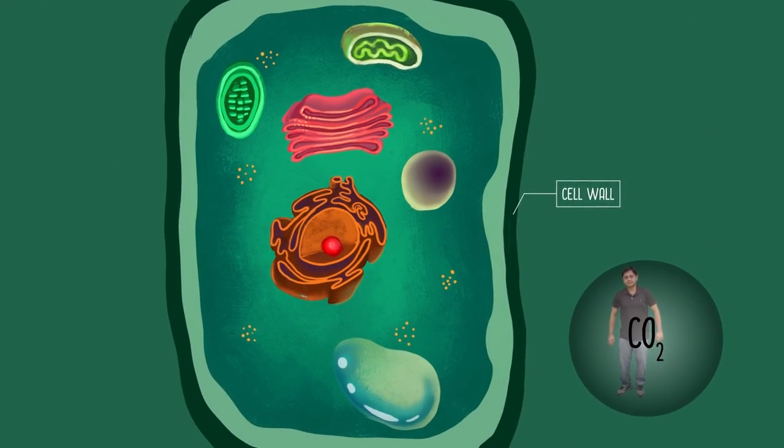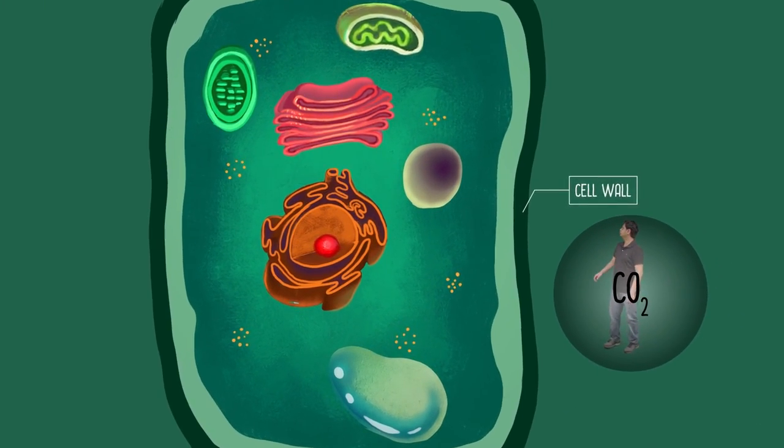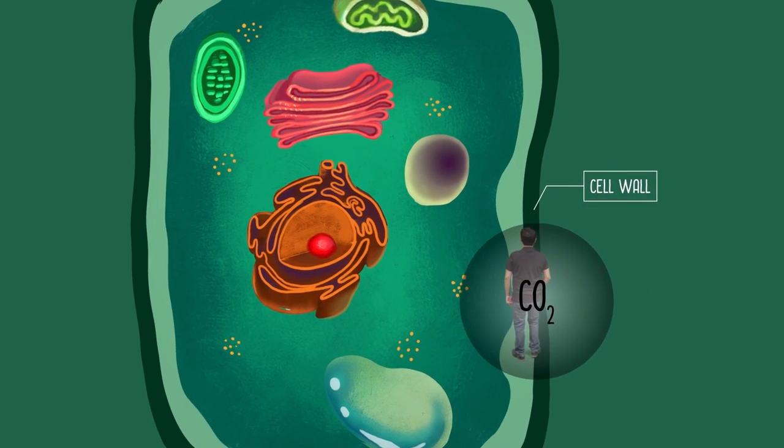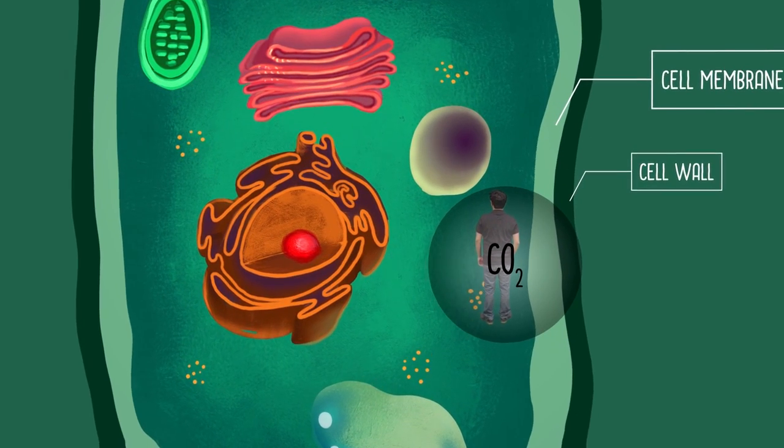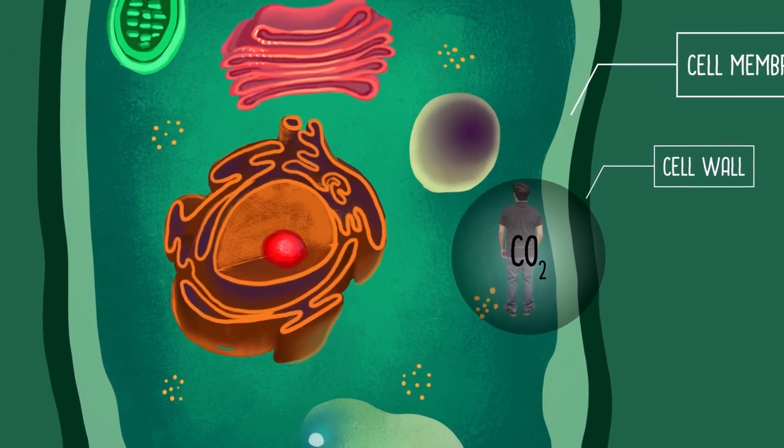What you see here is the cell wall. Go slightly inside. There you see the cell membrane, which encloses all the contents of the cell. This makes sure that the contents of the cell don't spill out.